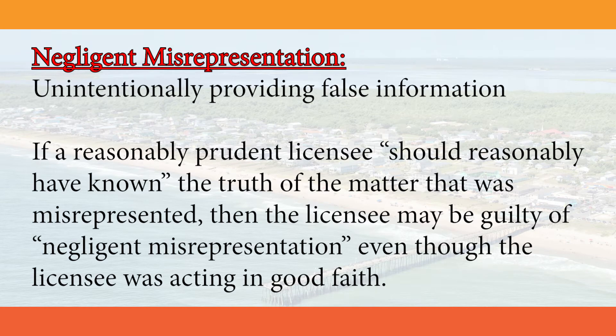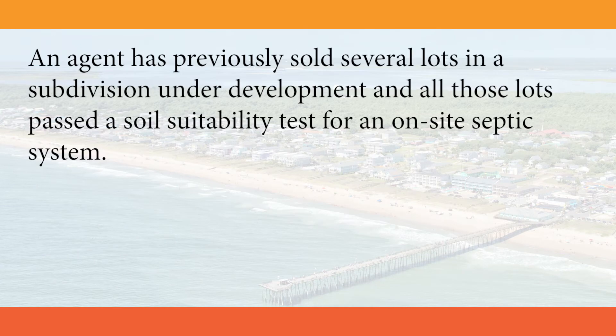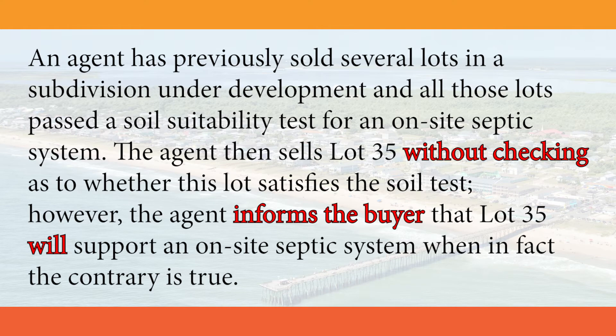Negligent misrepresentation: unintentionally providing false information. If a reasonably prudent licensee should reasonably have known the truth of the matter that was misrepresented, then the licensee may be guilty of negligent misrepresentation, even though the licensee was acting in good faith. For example, an agent has previously sold several lots in a subdivision under development, and all those lots passed a soil suitability test for an on-site septic system. The agent then sells lot 35 without checking as to whether this lot satisfies the soil test. However, the agent informs the buyer that lot 35 will support an on-site septic system when in fact the contrary is true.